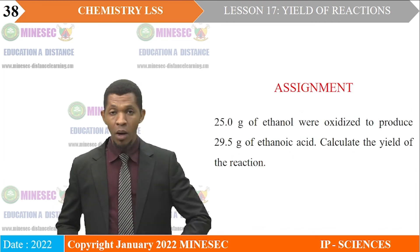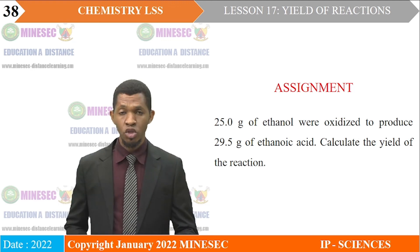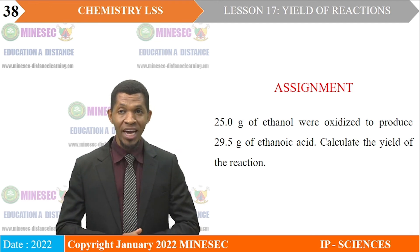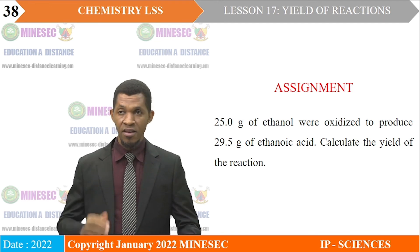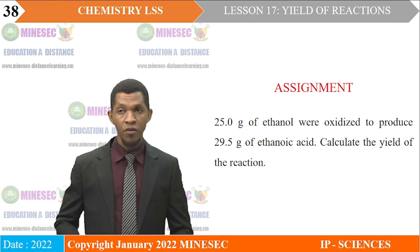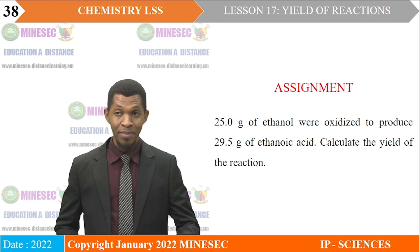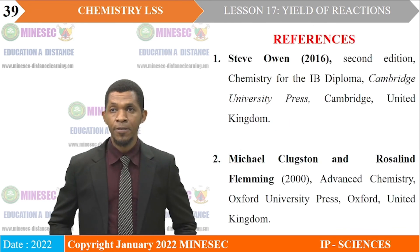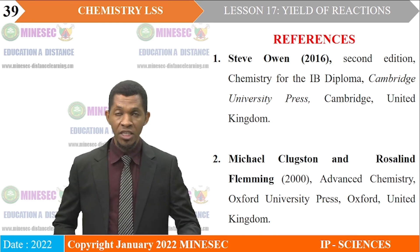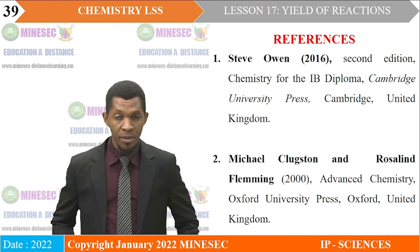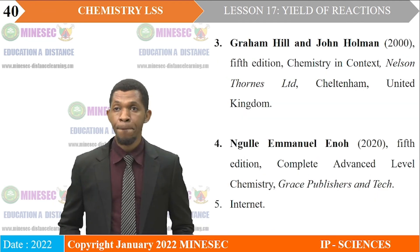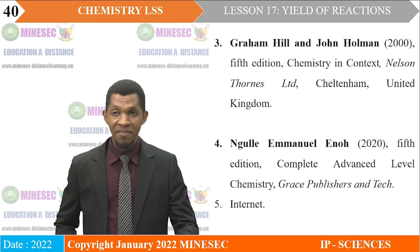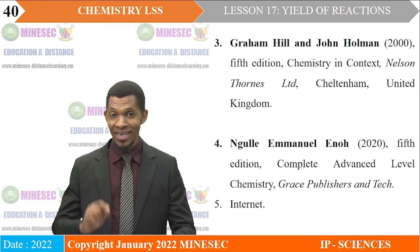Assignment — before our next lesson, answer this question: 25.0 grams of ethanol were oxidized to produce 29.5 grams of ethanoic acid. Calculate the yield and the percentage yield of the reaction. References: Chemistry for IB Diploma by Steve Owen; Advanced Chemistry by Michael Clarkston and Rosalie Fleming; Chemistry in Context by Graham Hill and John Holman; Complete Advanced Level Chemistry by Ngule Emmanuel Eno; and the Internet.